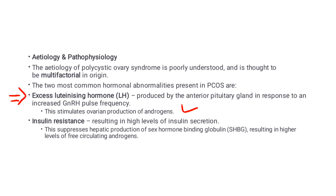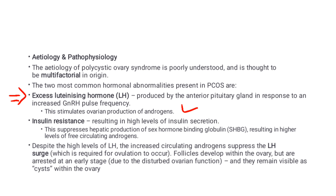The second hormonal abnormality is insulin resistance, which results in higher levels of insulin secretion. This suppresses hepatic production of sex hormone binding globulin, resulting in higher levels of free circulating androgens. Despite high levels of LH, the increased androgens suppress the LH surge required for ovulation to occur.